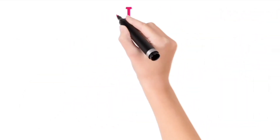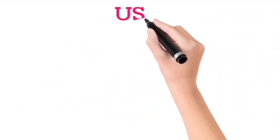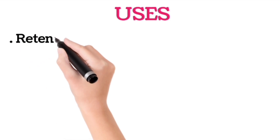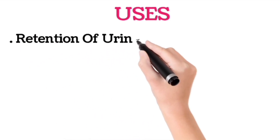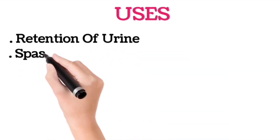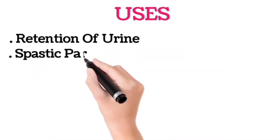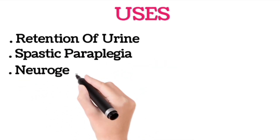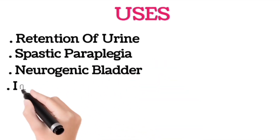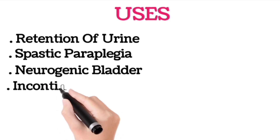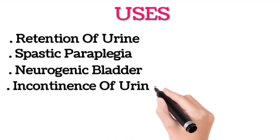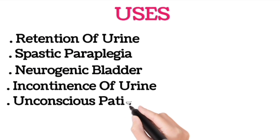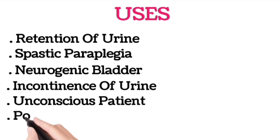Now let's go to Foley catheter's usage. Number one: when there is retention of urine, you can use a Foley catheter. Number two: spastic paraplegia — the most common cause is multiple sclerosis. Then neurogenic bladder — the most common causes are diabetes, multiple sclerosis, and Parkinson's disease.